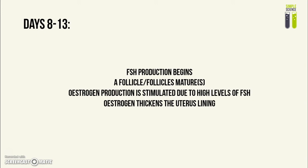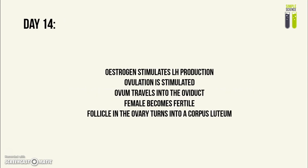So a high level of follicle stimulating hormone stimulates estrogen, and in turn estrogen inhibits the production of follicle stimulating hormone. On day 14, which is typically the day of ovulation, estrogen stimulates the production of luteinizing hormone due to the high levels of estrogen. The luteinizing hormone then stimulates ovulation, which is when the ovum is released from the ovary into the oviduct.